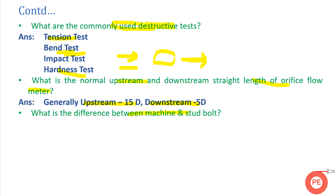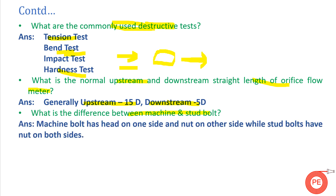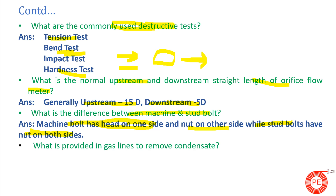What is the difference between a machine bolt and a stud bolt? A machine bolt has a head on one end and a nut on the other, and can be tightened from one end only. A stud bolt has nuts on both ends and can be tightened from both ends.